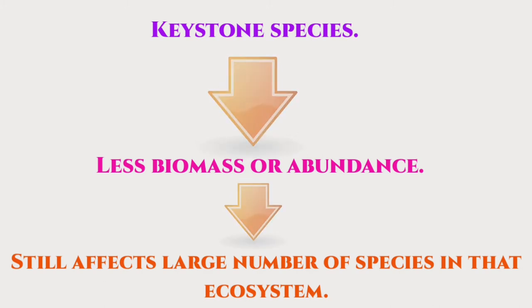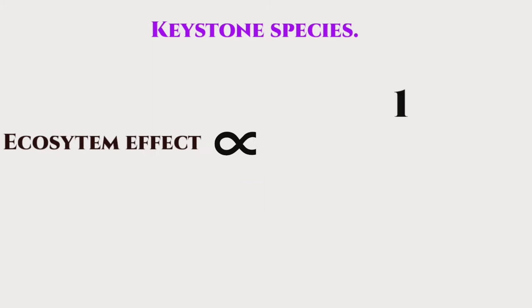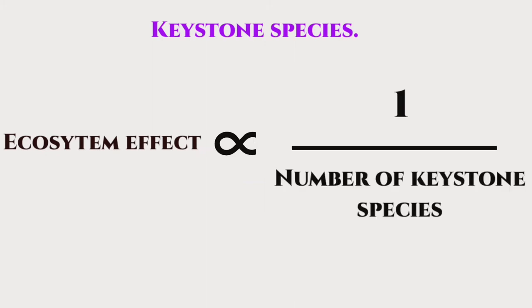Keystone species are usually top predators or engineer species. The health of the ecosystem is inversely proportional to the loss of keystone species. Despite being disproportionate to their abundance, they play a major role in an ecosystem — minimum in number but maximum in effect.